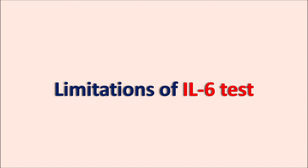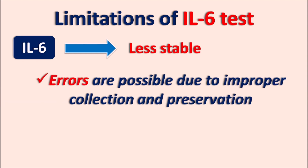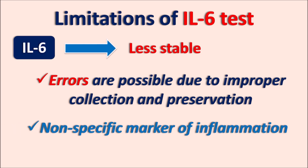The limitations of the IL-6 test include its very low stability. Because of this, the sample must be centrifuged within 30 minutes of collection, the plasma must be immediately refrigerated or frozen within 24 hours, and if these precautions are not followed, errors result. Errors are possible due to improper collection and preservation. The second important limitation is that IL-6 is not a specific biomarker for inflammation — it does not indicate a particular type of inflammatory condition, whether autoimmune disorder, infection, sepsis, or cancer. In all these conditions IL-6 may be elevated, so it does not specify a particular type of inflammatory response.